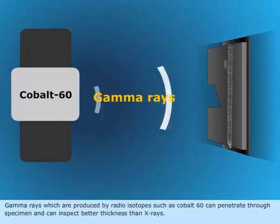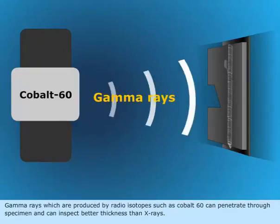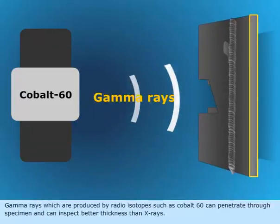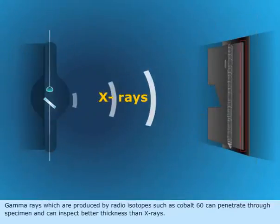Gamma rays which are produced by radioisotopes such as cobalt-60 can penetrate through specimen and can inspect better thickness than X-rays.